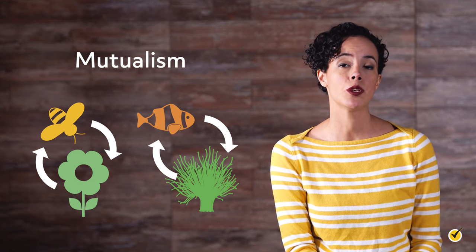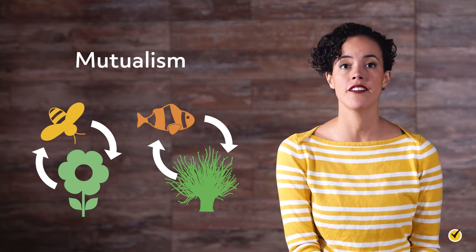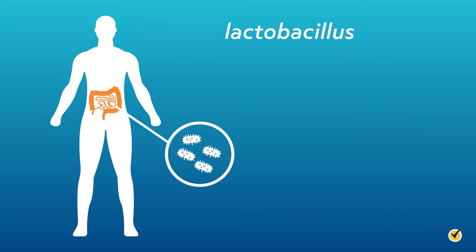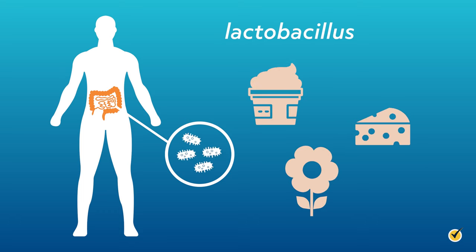Another example of mutualism that you may not have thought of is the symbiotic relationship between us, humans, and the bacteria in our gut. Take Lactobacillus bacteria for a specific example. Lactobacilli are a common type of bacteria found in yogurt, cheese, and some plants. So when you eat any of these foods, the bacteria will make a home out of your intestines by feeding off of the sugars you eat while simultaneously helping you digest that sugar. Both parties benefit, so this is also a mutualistic relationship.